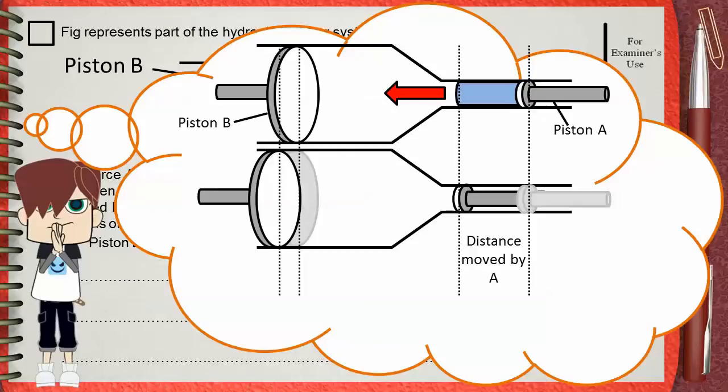Since the volume of transferred oil is the same, this will cause Piston B, which has larger surface area, to move a smaller distance. So, the answer will be, the same volume of oil is transferred from A to B.